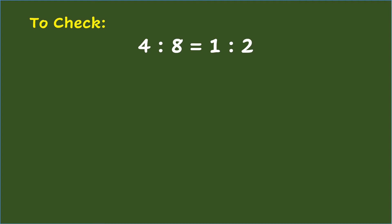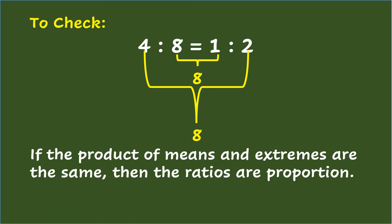To check whether two ratios in colon form are equal, like 4 is to 8 equals 1 is to 2, multiply the means: 8 times 1 equals 8. Then multiply the extremes: 4 times 2 equals 8. If the product of the means and the extremes are the same, then the ratios are proportion.